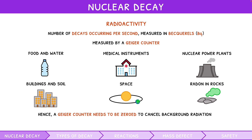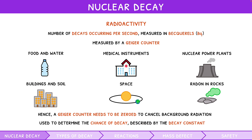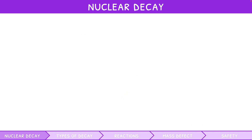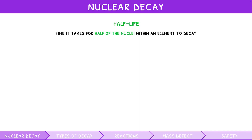Despite decay being a random process, a Geiger counter can be used to determine the chance that it occurs. This chance is described by the decay constant, measured per second. The decay constant can be used to determine an element's half-life — a property of a radioactive atom defined as the amount of time it takes for half the nuclei within an atom to decay. The IB expects you to be able to determine the half-life of an element both graphically and algebraically.